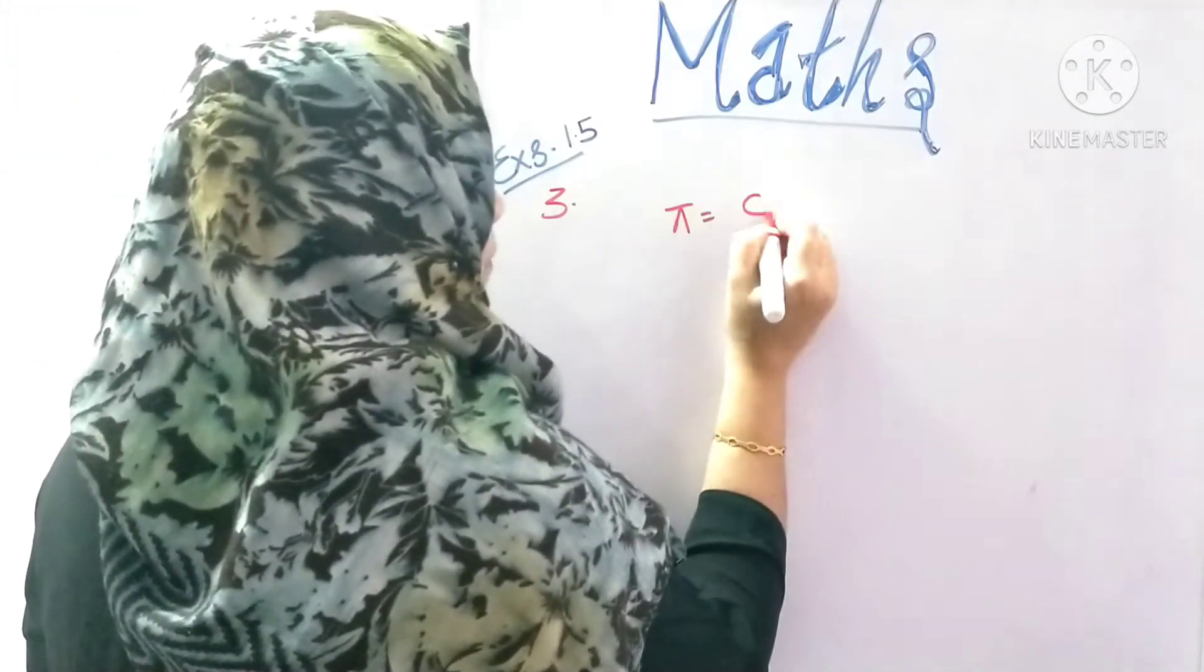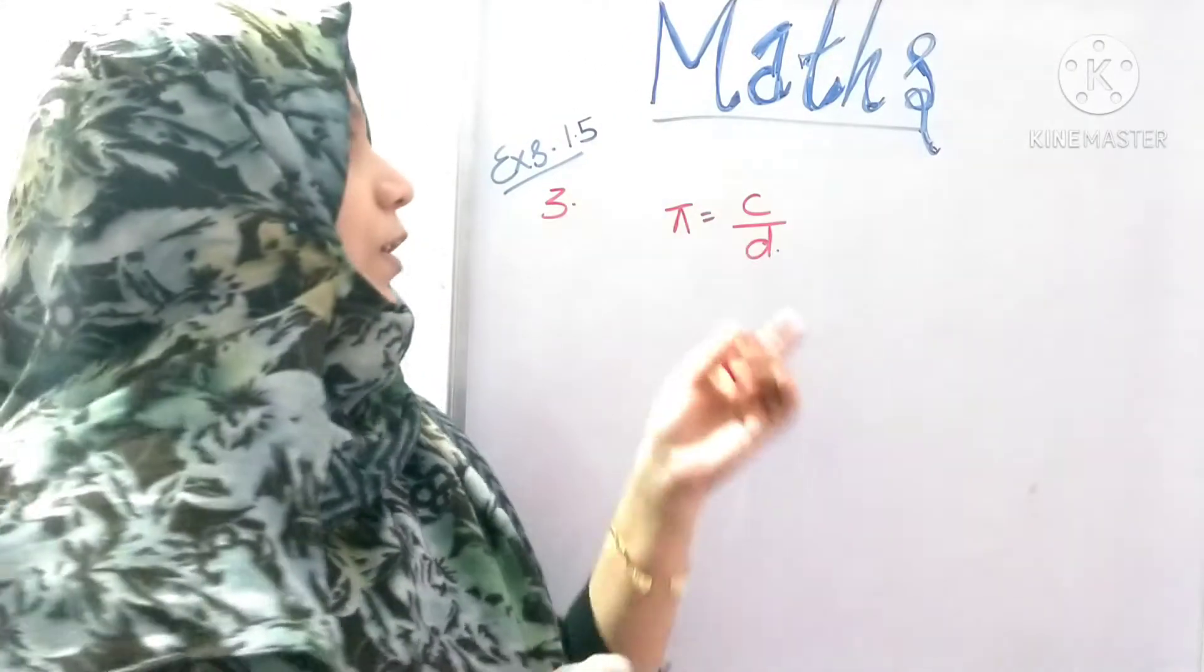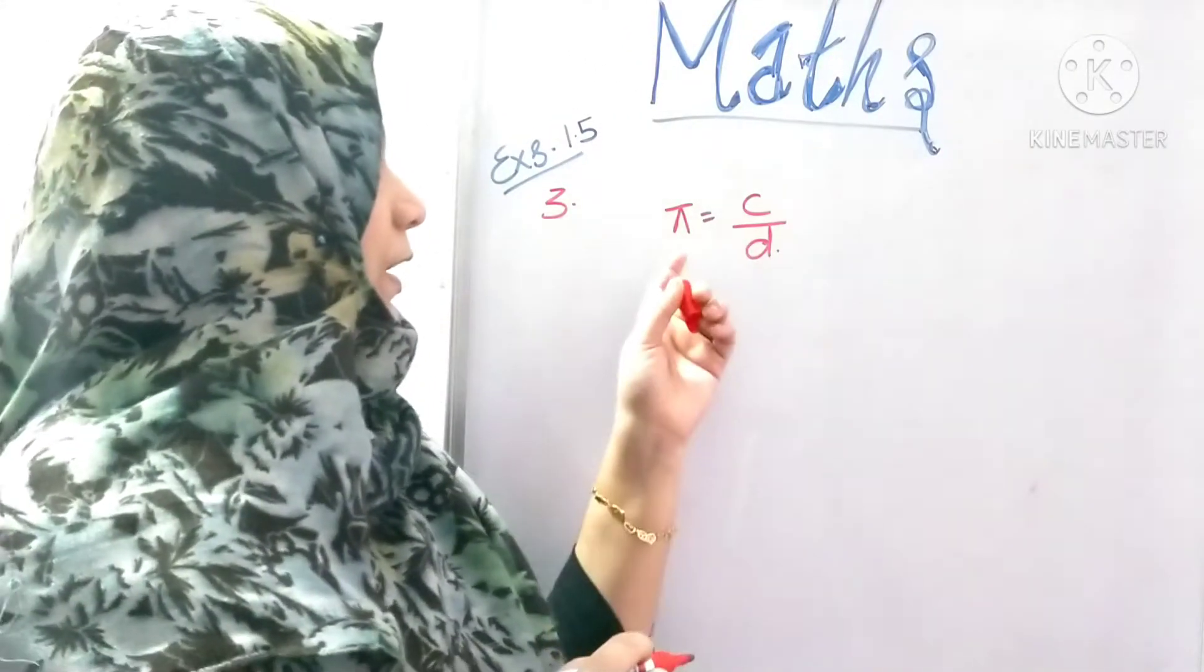It is circumference divided by diameter, which means pi is irrational.